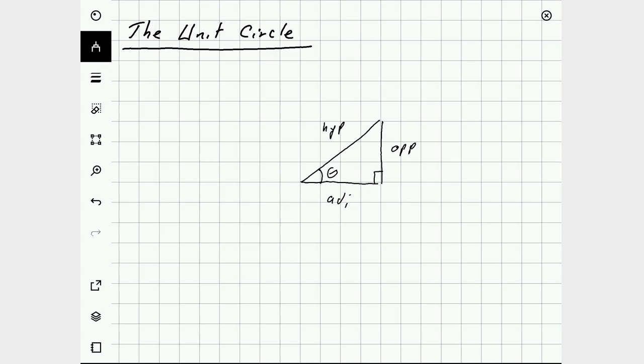Sine is opposite over hypotenuse, cosine is adjacent over hypotenuse, and tangent is opposite over adjacent.